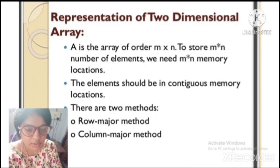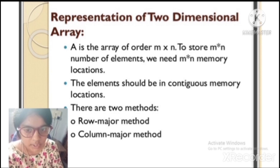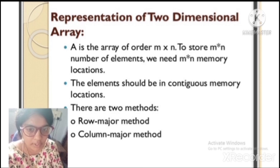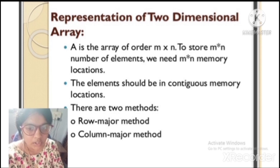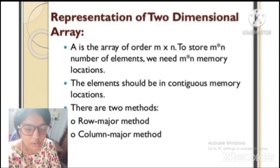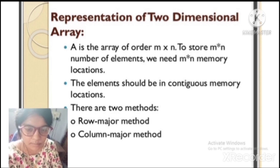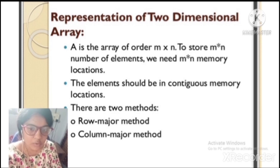Representation of a two-dimensional array: array A is of order m×n. To store m×n elements, we need m×n memory locations in continuous memory. There are two methods for storing: row-major order and column-major order.